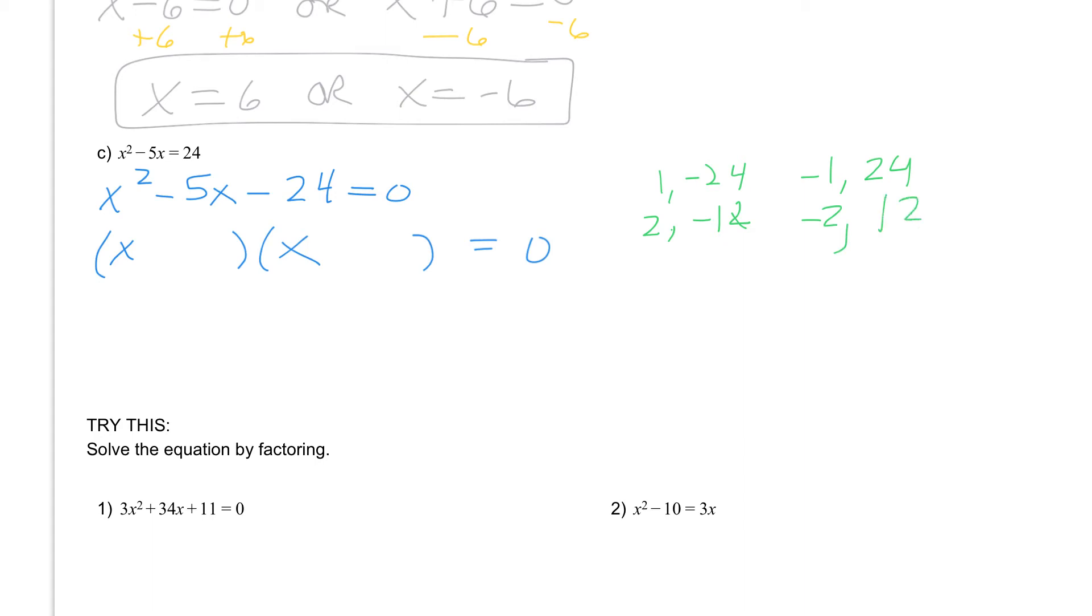I could do 3 and -8, I could do -3 and 8, I could do 4 and -6, or -4 and 6. So a lot of different possibilities here.